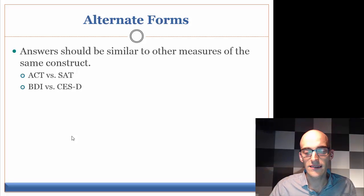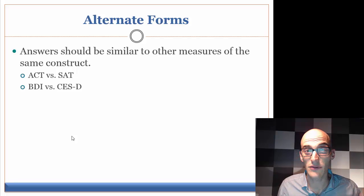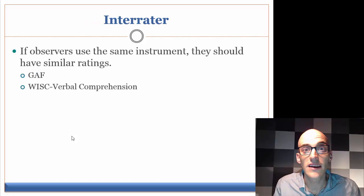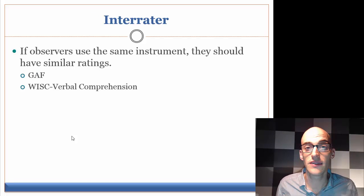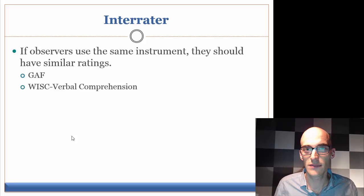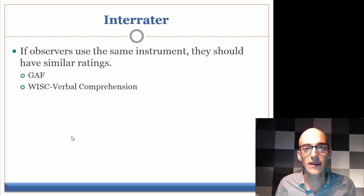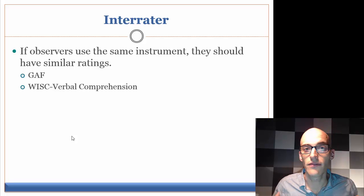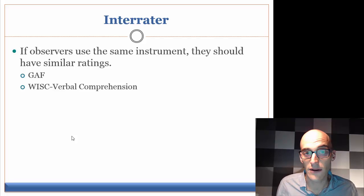If one measurement says a person is suffering with many symptoms of depression, we would expect the second measurement to tell a similar story. The last form of reliability is interrater reliability, which has to do with the people using the test. If two different professionals are using the same test to measure the same thing, they should produce about the same score. You can think of this like the Olympics, where there's a panel of judges rather than just one — if three people are judging a dive, you'd expect strong interrater reliability.